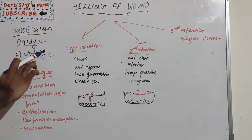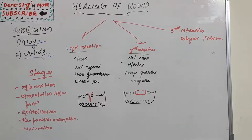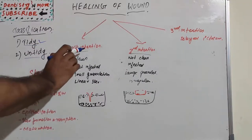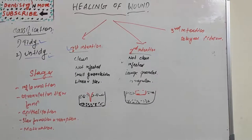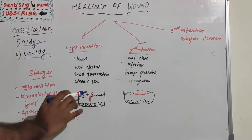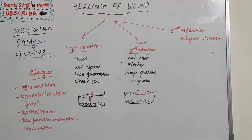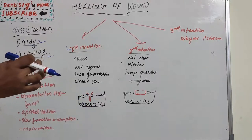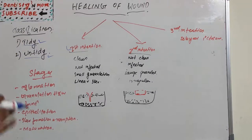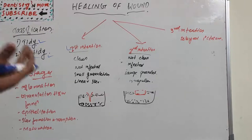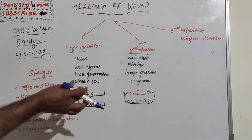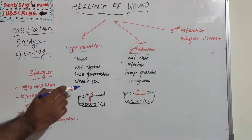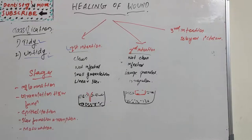Tidy wounds are easy to approximate and heal, whereas untidy ones take a lot of time. There are basically two methods of healing: primary healing or first intention, and secondary healing or second intention. First intention is the easiest — the wound is very clean and sharp, with edges closely approximated, like a knife wound or surgical wound. There will not be any infection or significant tissue loss.